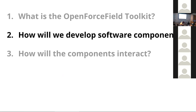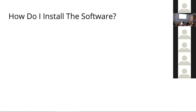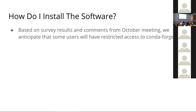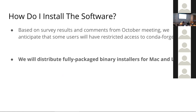Moving on to part two: the different software components beyond the OpenForceField toolkit and how we'll develop them in this consortium. The number one biggest thing we think about is deployment — frequently scientific software runs great on my computer but not yours. The number one plan for reliability is to send out large binary installers for Mac and Linux. We can send them on a USB key or via file transfers; these are things that across industry are used with very high reliability.